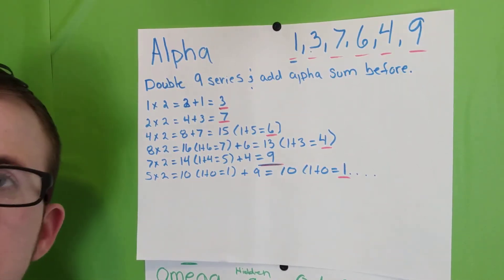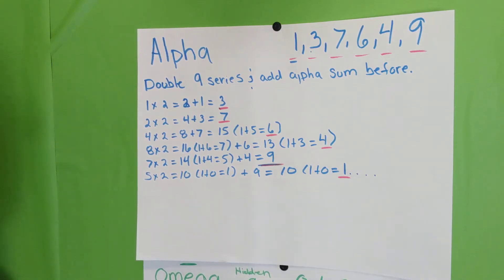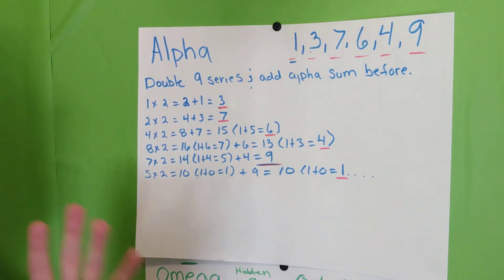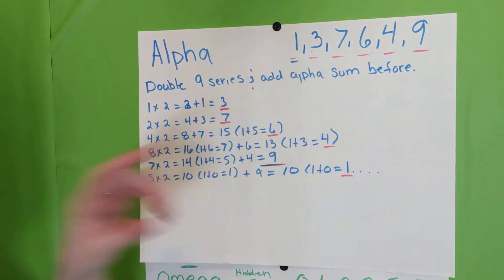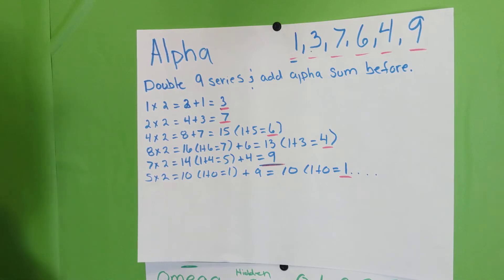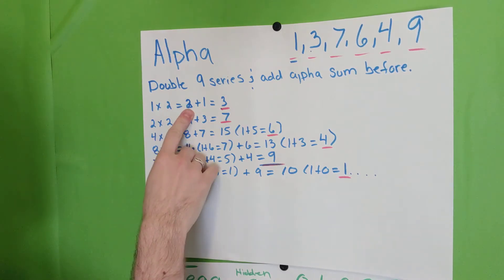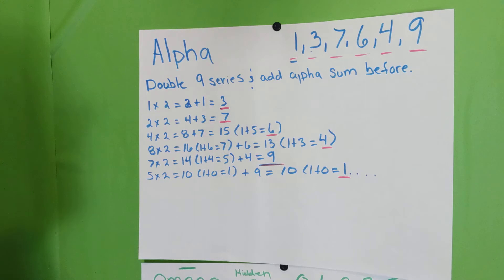Let's break down the alpha series. By using the nine series, which we've talked about before, we're going to discover the alpha series. Doubling the nine series and adding the alpha sum before the number will give you the next number. So as you can see, 1 times 2 is 2, plus 1 is 3 — there's your next number.